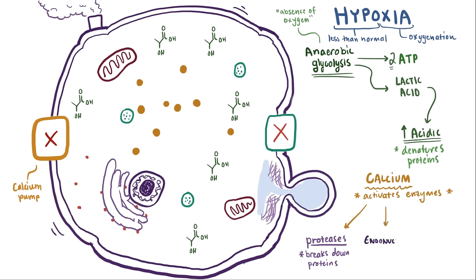Also, endonucleases can be activated, which can cut up DNA, the cell's genetic material. And if we get back to the lactic acid, as more lactic acid builds up and the environment gets more acidic, the lysosomal membrane can be damaged as well, which usually houses these hydrolytic enzymes, whose job is basically to grind up large molecules.